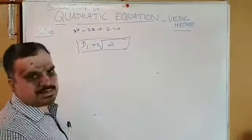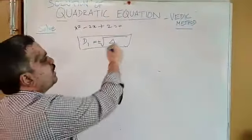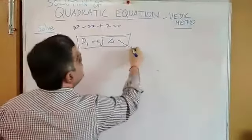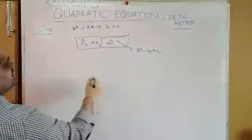Vedic method. The formula is D1, derivative 1, first derivative, is equal to plus or minus square root of delta. Delta is b square minus 4ac. We call it discriminant. From the question, you find out ABC value.